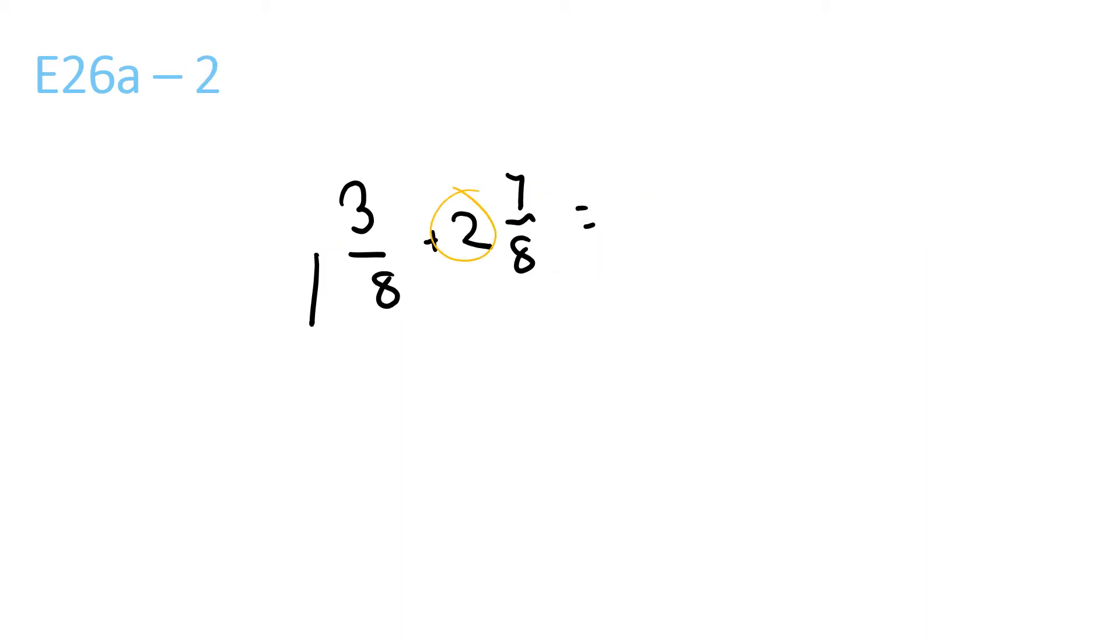1 plus 2 is 3. 3 plus 7 is 10 over 8, because the 8 stays the same. 8 goes into 10 once with a remainder of 2 over 8. 1 and 2 over 8 plus 3 equals 4 and 2 over 8.